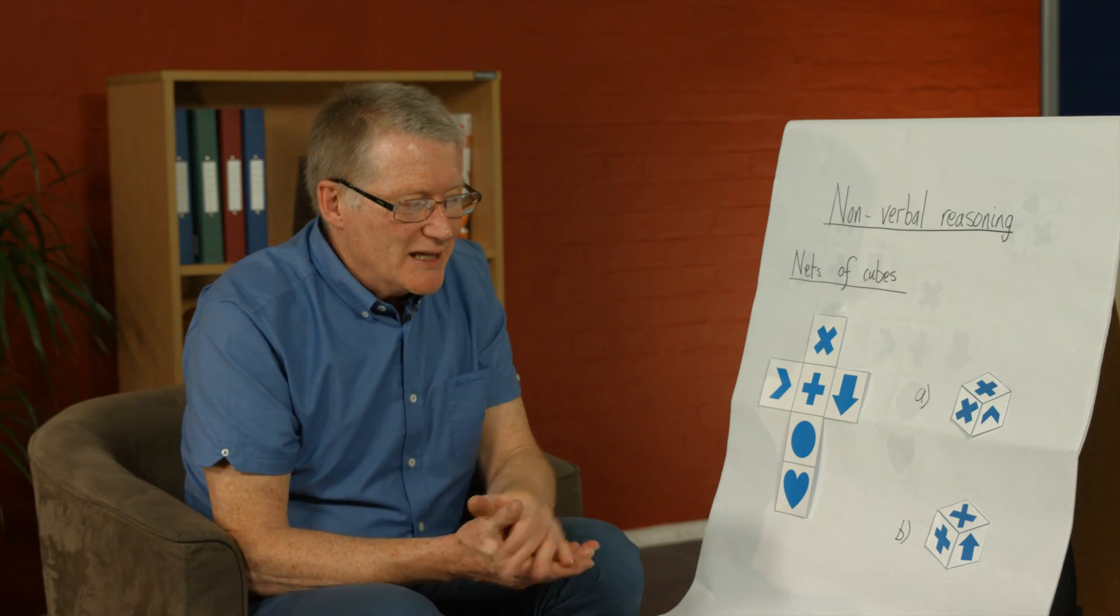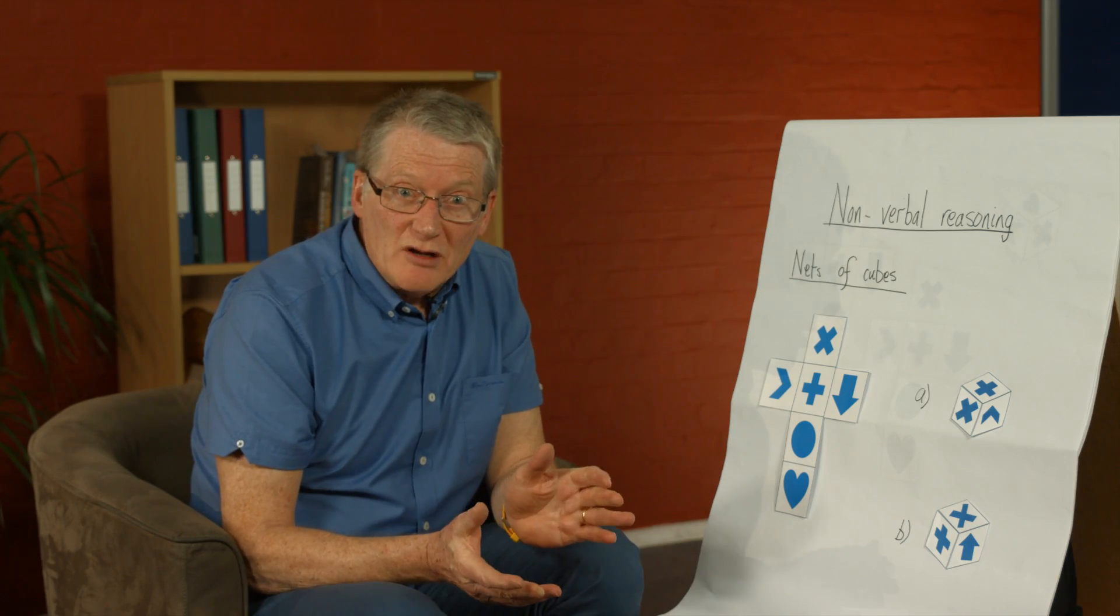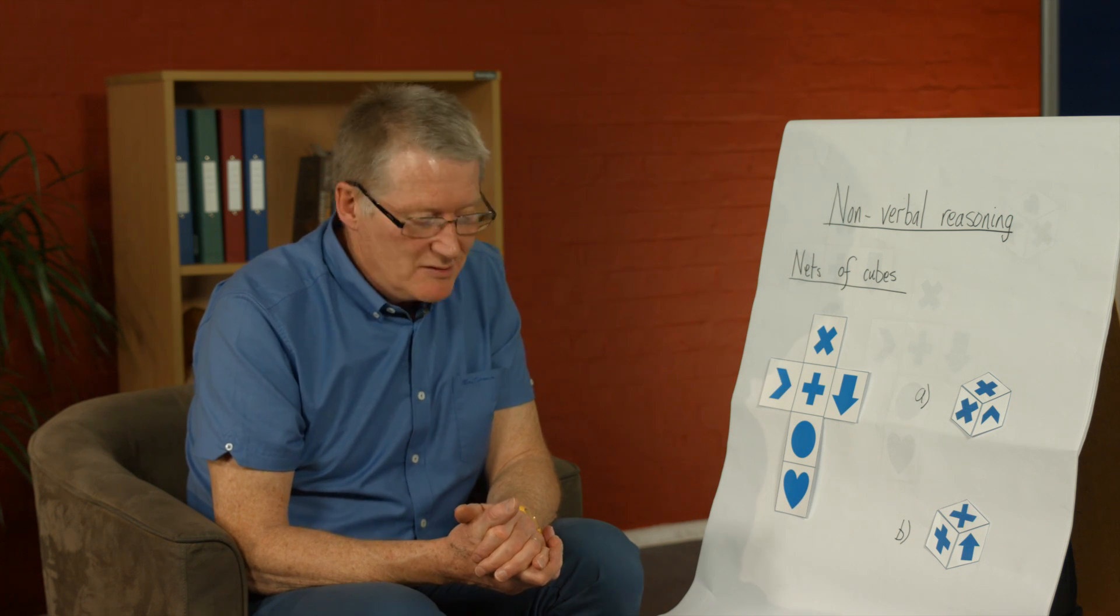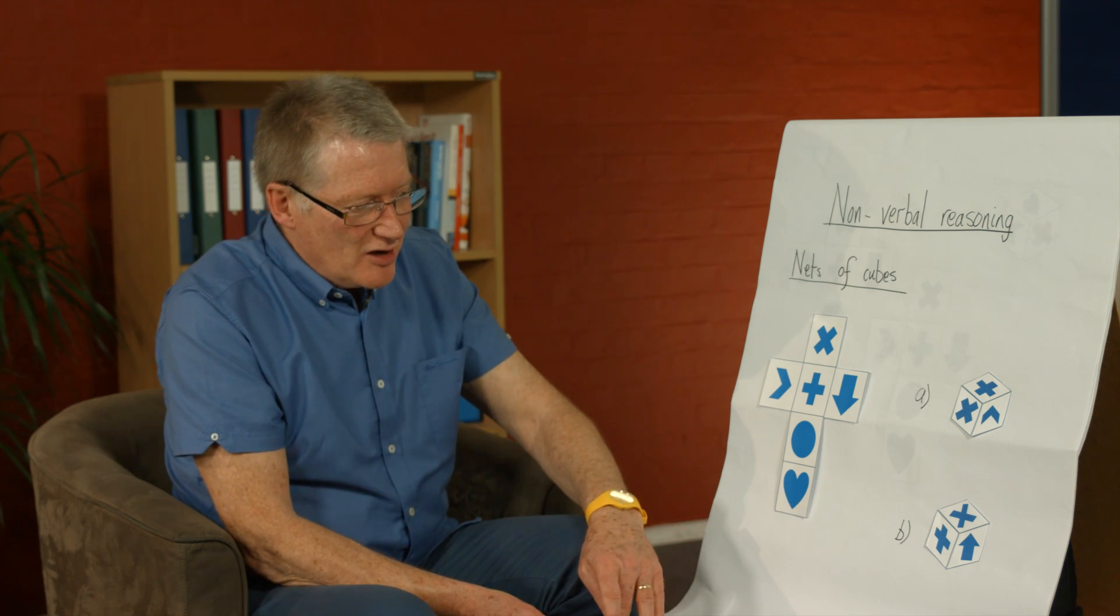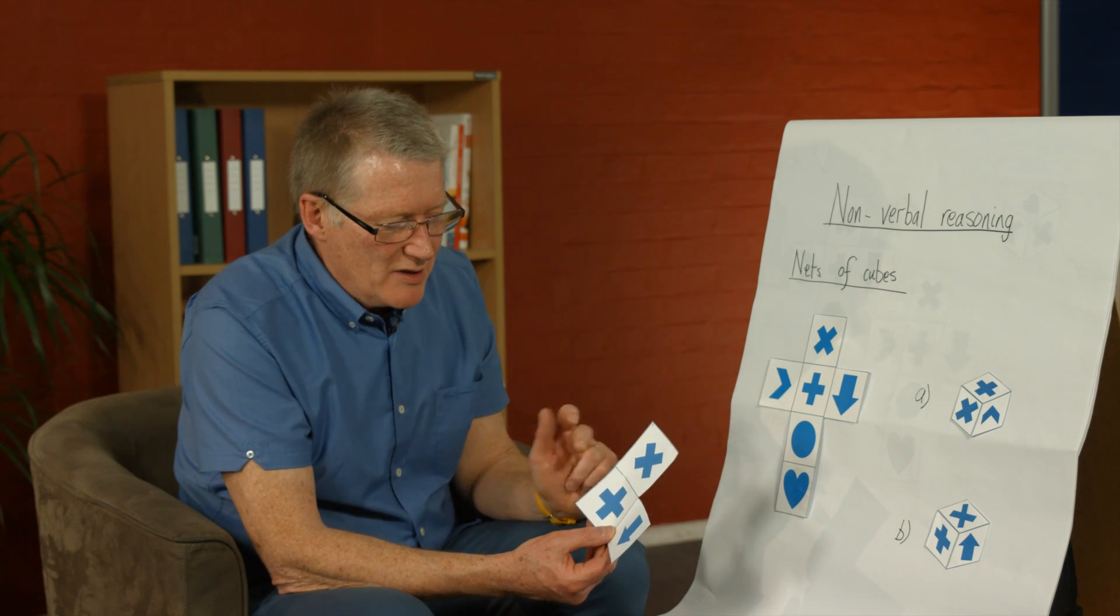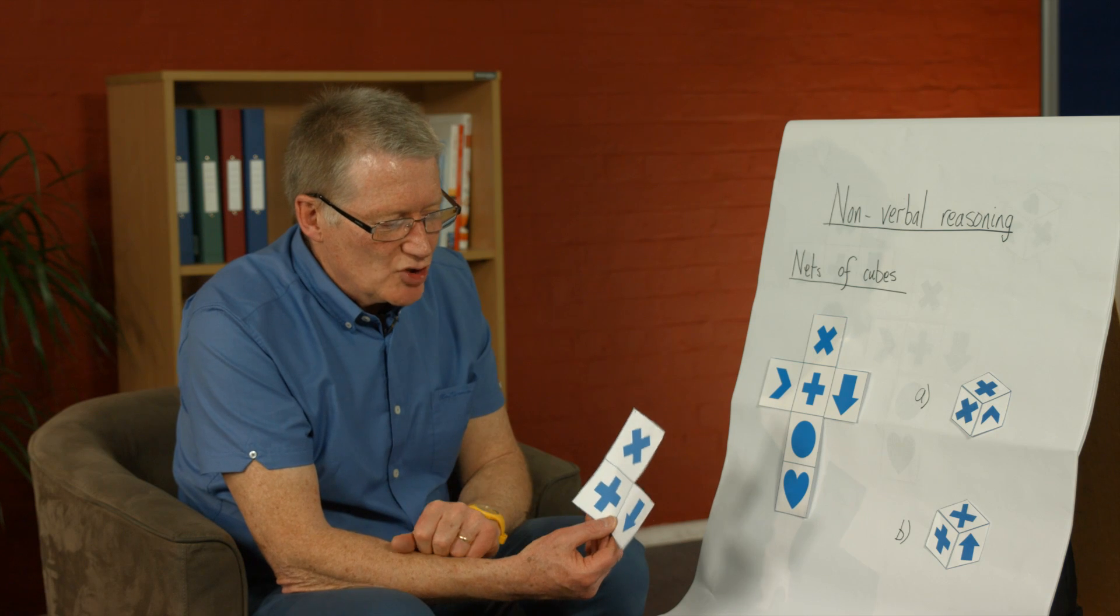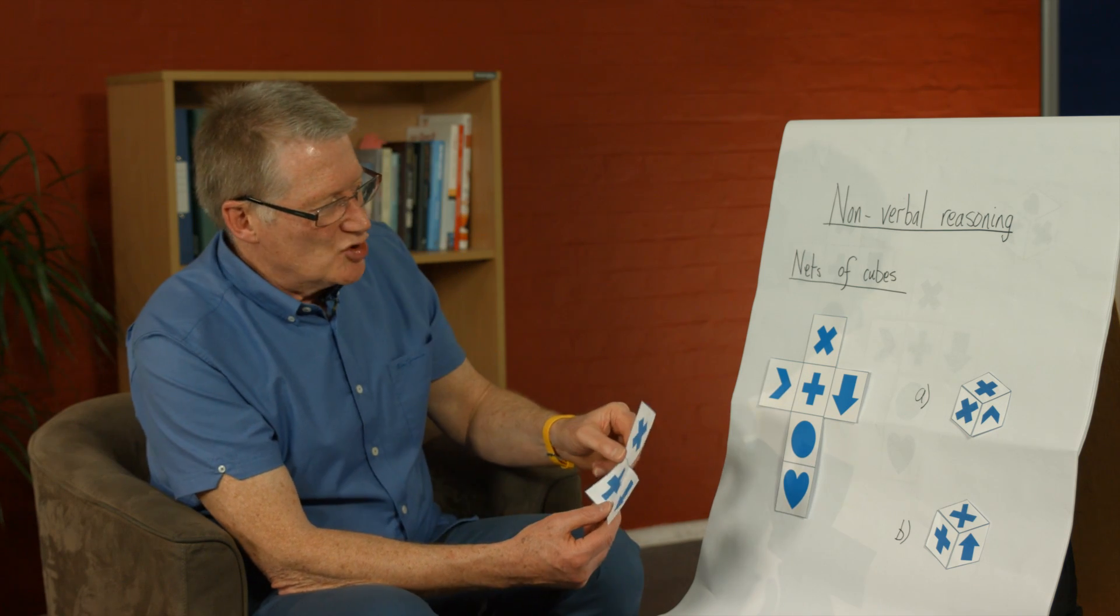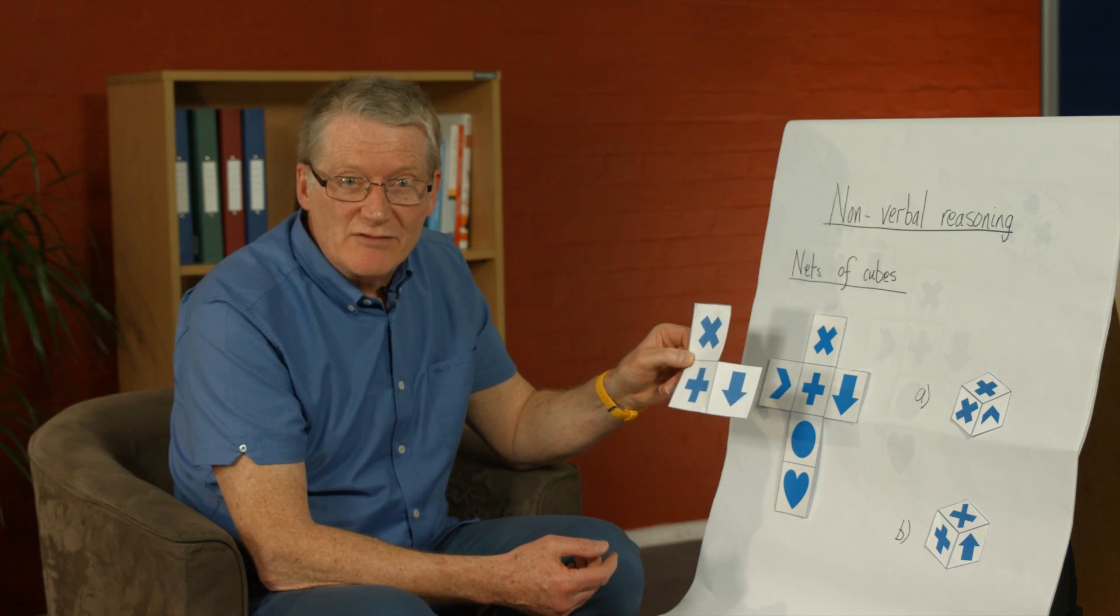Now let's have a look at part B. This time I'm going to show you that you can go the other way round. So let's start with the correct three shapes. That's a multiply shape, a plus shape and an arrow shape.